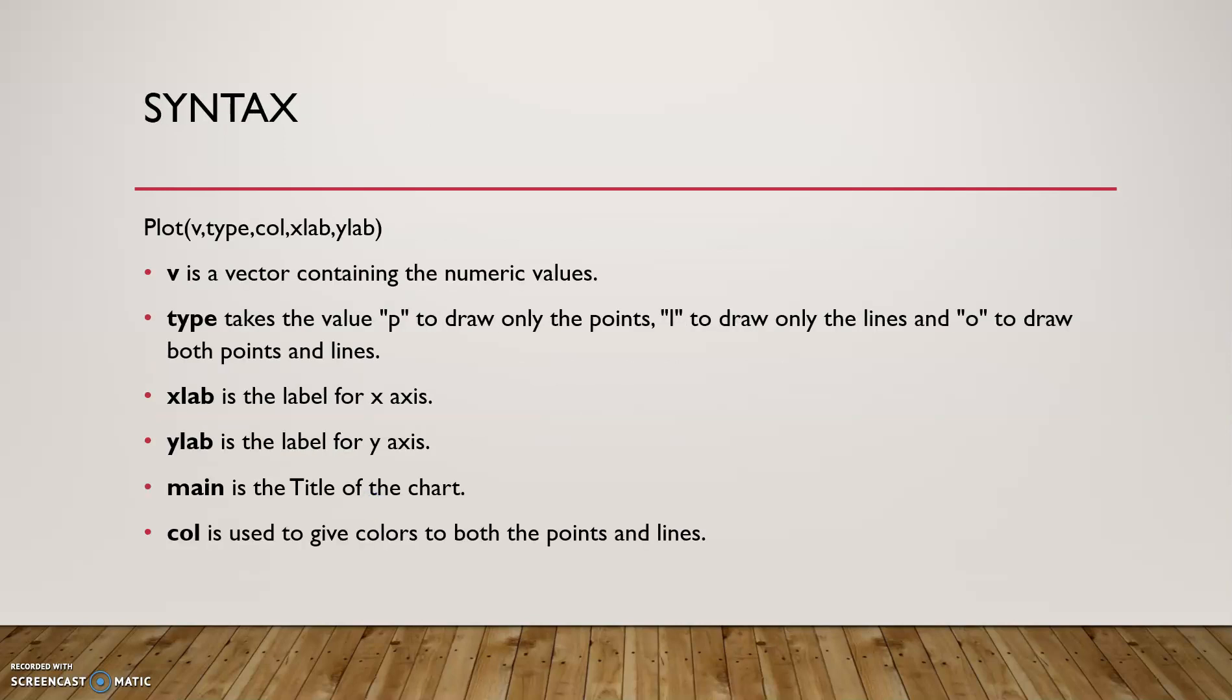plot of v is a vector containing the numeric value. type takes the value of v to draw the only points. xlab and ylab are the x-axis and y-axis names. main is the title of the chart. col is the color of the line chart.